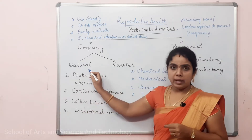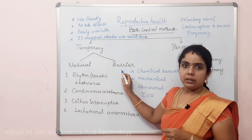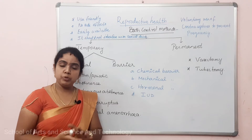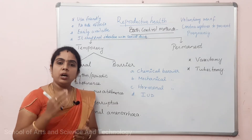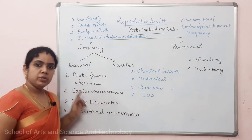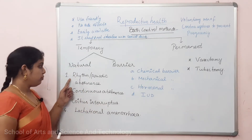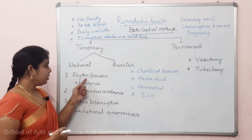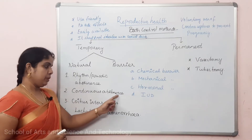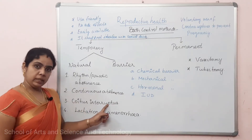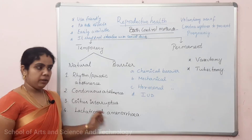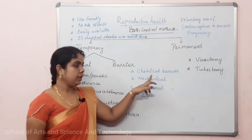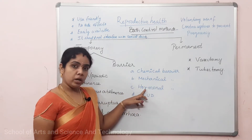Under temporary methods, the first is the natural birth control method and the second is the barrier birth control method. In the natural birth control method, no contraceptives are needed — it relies on self-control to avoid pregnancy. The natural methods include: rhythm and periodic abstinence, continuous abstinence, coitus interruptus, and lactational amenorrhea. The barrier methods include chemical barrier, mechanical barrier, hormonal barrier, and IUDs — intrauterine devices.